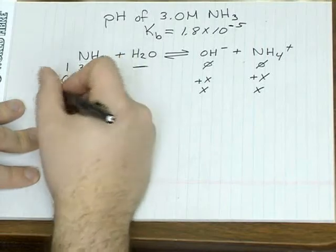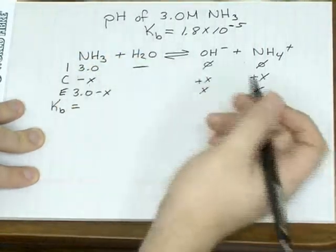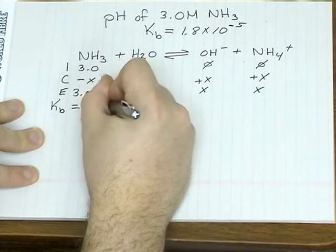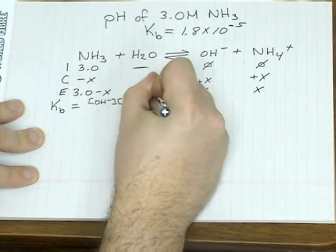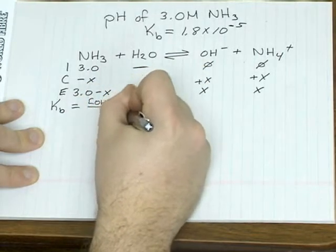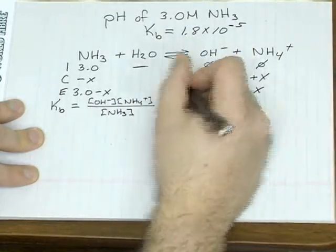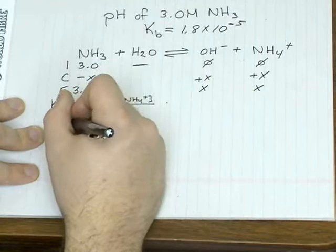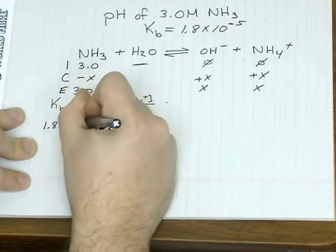So just like before, the Kb is just an equilibrium constant. And that's equal to the concentration of your two products over ammonia. Again, water is a liquid. It's not factored in.